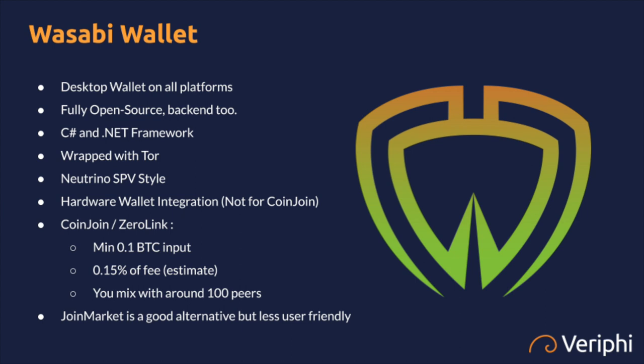Wasabi Wallet is the tool I recommend to fix both blockchain and network privacy. It's a desktop wallet available on Windows, Mac, and Linux. It's fully open source, including the back end — you connect to a server that is also open source, and you can run your own server. Wasabi is written in C# with the .NET framework. By default, when you launch it, it's already wrapped with Tor, which means it always uses Tor to connect to external sources, protecting your network privacy enormously.